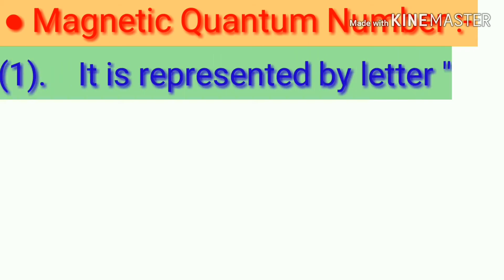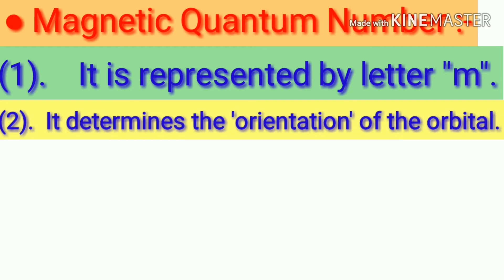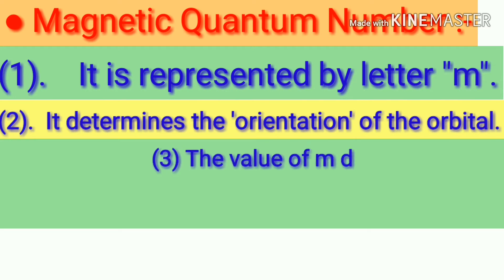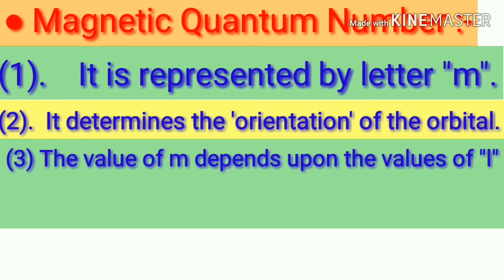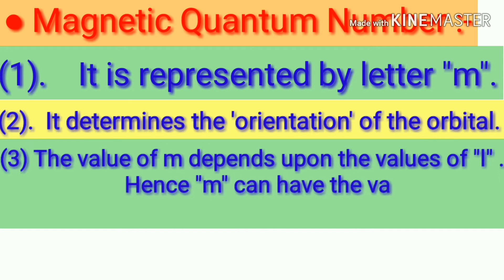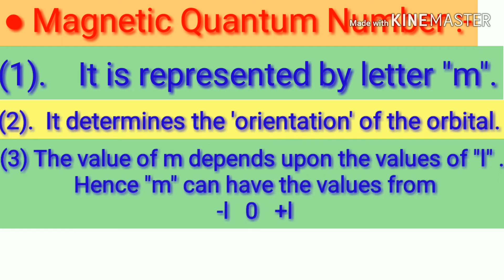We are going to see the third type of quantum number, that is magnetic quantum number. It is represented by letter M. It determines the orientation of the orbital. The value of M depends upon the values of L. Hence M can have the values from -L, 0, +L.